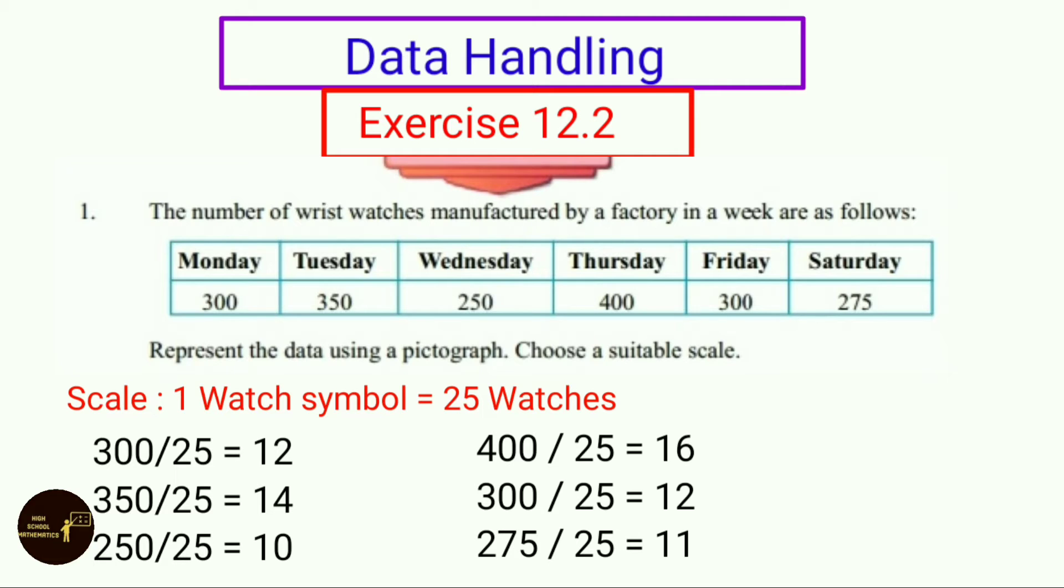Similarly for the remaining days. 350 by 25 equals 14, 250 by 25 equals 10, 400 by 25 equals 16, and so on.